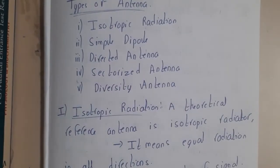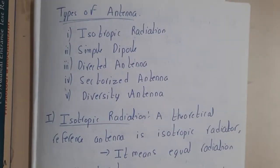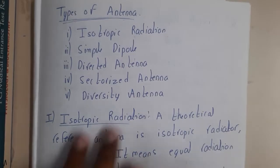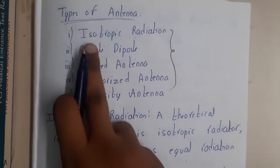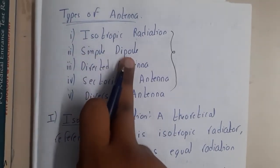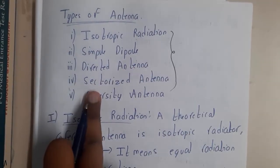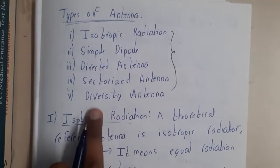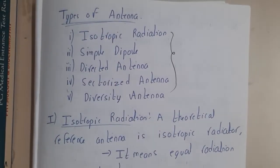Now let us go through the types of antennas. Antennas work in different ways. There are five different types: the first is the isotropic antenna, the second is the simple dipole antenna, the third is the directed antenna, the fourth is the sectorized antenna, and the fifth is the diversity antenna.